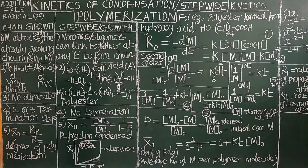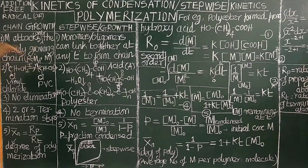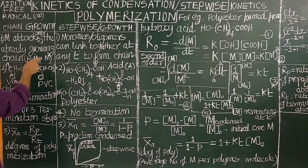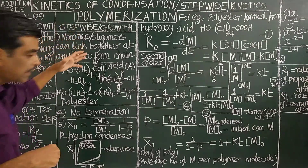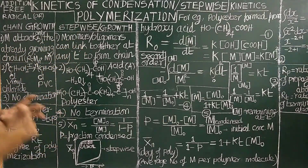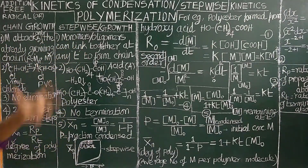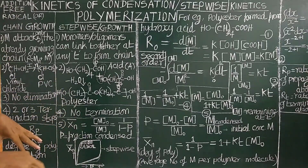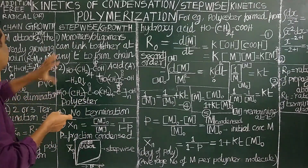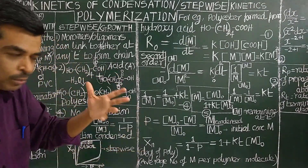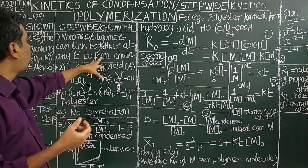In chain growth polymerization, the name itself suggests: the monomer molecule attacks only the already growing polymer radical chain. Whereas in condensation (step growth) polymerization, monomers, oligomers, or polymers can attack any other monomer present at that time and link together to form the chain.